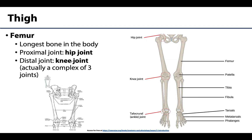Moving to the thigh, there is a single bone per thigh called the femur, which is the longest bone in the body. The head of the femur articulates with the coxal bone to form the hip joint. The distal portions of the femur articulate with the tibia and the patella to form the complex knee joint, and we will spend quite a bit of time on the knee in future sessions, as it is a frequently injured and clinically relevant area.